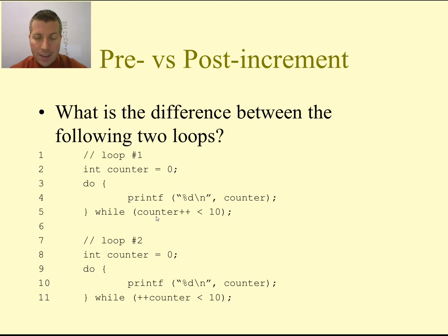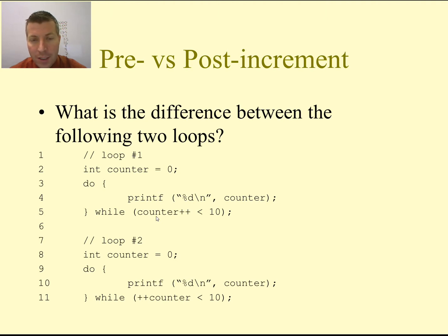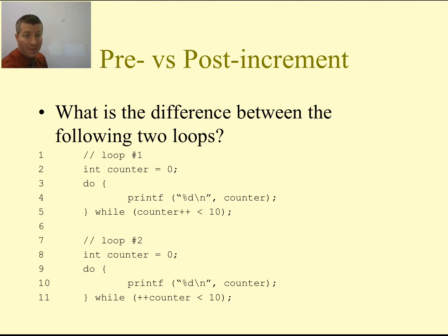Lines one through five are exactly the same as lines seven through eleven. The only difference is the condition on line five uses the post-increment operator (counter++) versus line eleven which uses the pre-increment operator (++counter). Walking through the first loop: counter starts at 0, we print 0. The condition checks counter++ — we evaluate whether the current value (0) is less than 10, it is, then we increment counter to 1. We loop back, print 1, check whether 1 is less than 10, increment to 2, print 2, and so on.